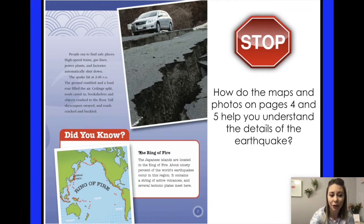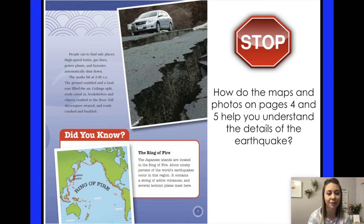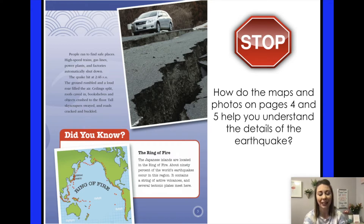Did you know? The Ring of Fire. The Japanese islands are located in the Ring of Fire, where about 90% of the world's earthquakes occur. It contains a string of active volcanoes and several tectonic plates meet here. We've talked about the Ring of Fire before, and you'll learn more about it in our science.